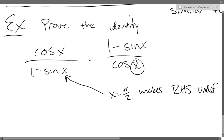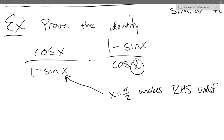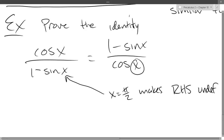Now 1 minus sine of pi over 2 is 1 minus 1, which is zero. So now at least we're both undefined — hopefully this makes it even. What I originally wrote up here would be false; hopefully with the correction it's true.